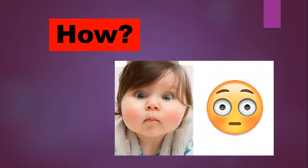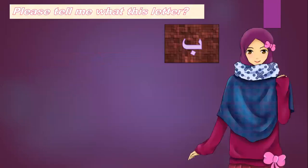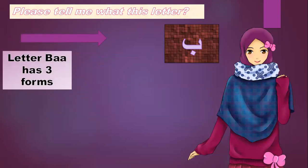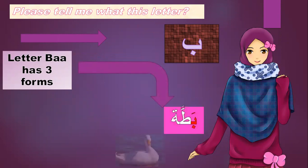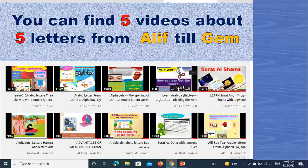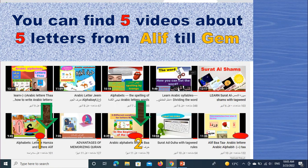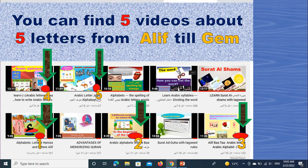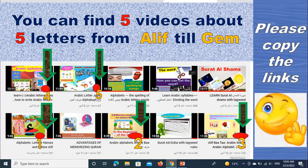How? Please tell me, what's this letter? Yes, it's letter Ba. Letter Ba has three forms: at the beginning of the word — Batta; in the middle — Mubarret; and at the end. You can find five videos about five letters from Aleph till Jim: letter Hamza, letter Ba, letter Te, letter Tha, and letter Jim. Please copy the links.